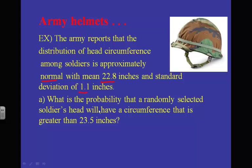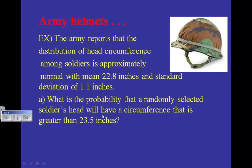What's the probability that a randomly selected soldier's head will have a circumference greater than 23.5 inches? This is for a single randomly selected soldier. We can simply use normCDF: lower is 23.5, upper is 99999, mean is 22.8, standard deviation is 1.1. The probability that X is greater than 23.5 is 0.2623.